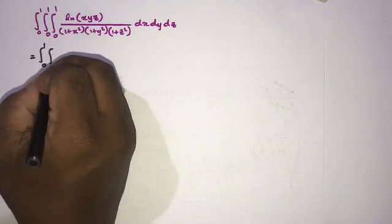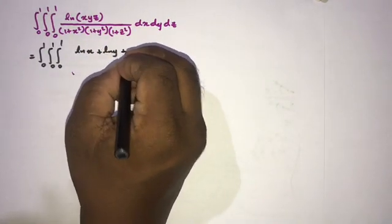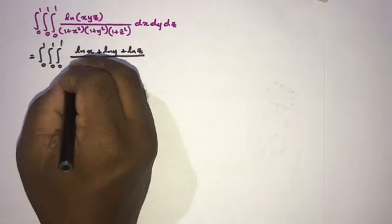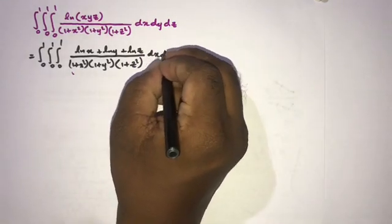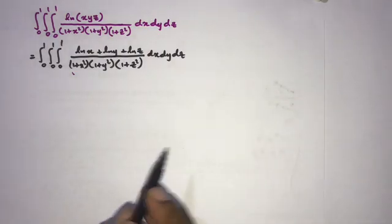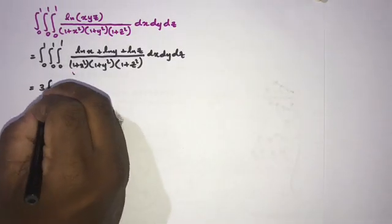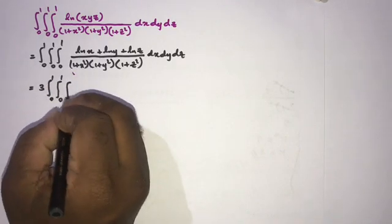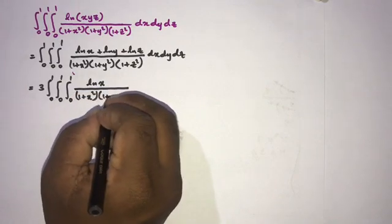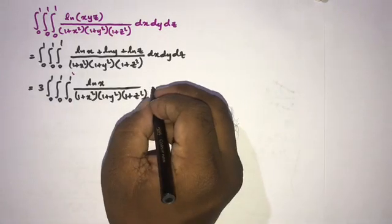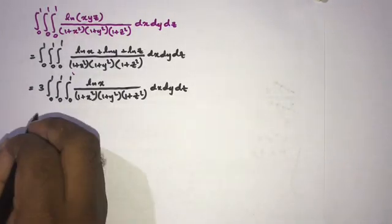So this integral equals the triple integral from 0 to 1 of [ln(x) + ln(y) + ln(z)] over (1 + x²)(1 + y²)(1 + z²) dx dy dz. Because this is a symmetric integral, we can write this as 3 times the triple integral of ln(x) over (1 + x²)(1 + y²)(1 + z²) dx dy dz.